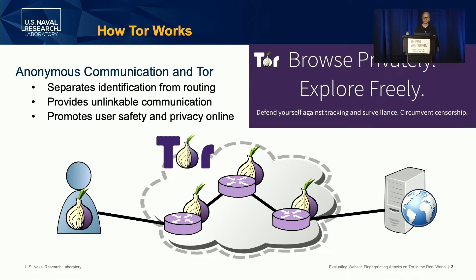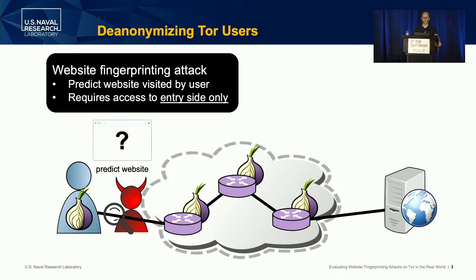One of the most devastating attacks against the Tor network are those that de-anonymize Tor users, and in particular, there's a website fingerprinting attack which can de-anonymize users with only access to the entry side by observing the patterns of encrypted traffic sent between the client and the Tor network and predicting the website visited by the user.